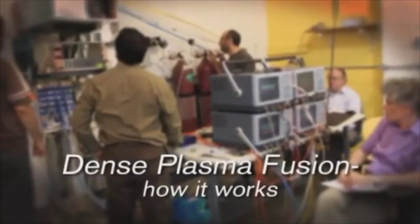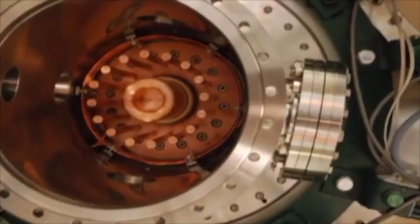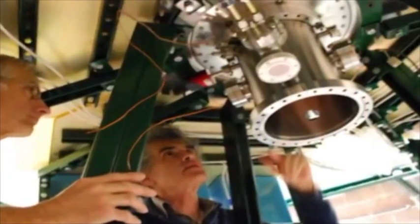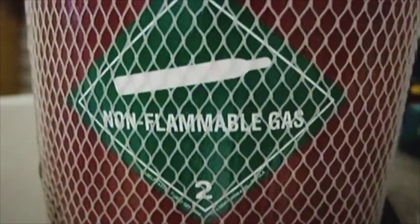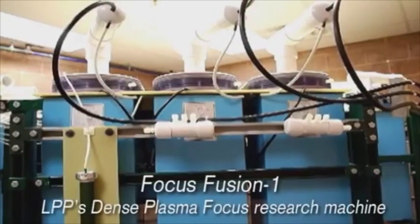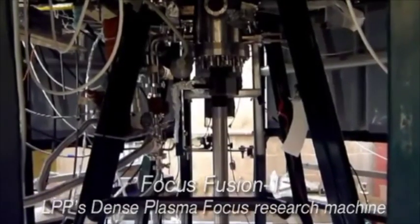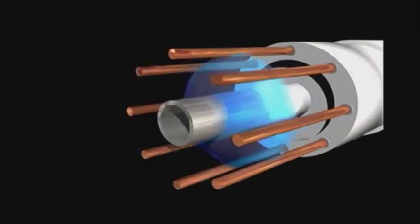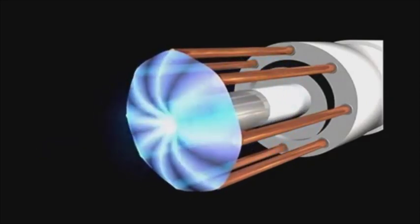At the heart of the dense plasma focus are two cylindrical electrodes, only a few inches across, nested inside each other. The electrodes are enclosed in a vacuum chamber with a low-pressure gas filling the space between them. A pulse of electricity from a capacitor bank, an energy storage device, is discharged across the electrodes. For a few millionths of a second, an intense current flows from the outer to the inner electrodes and ionizes the gas.